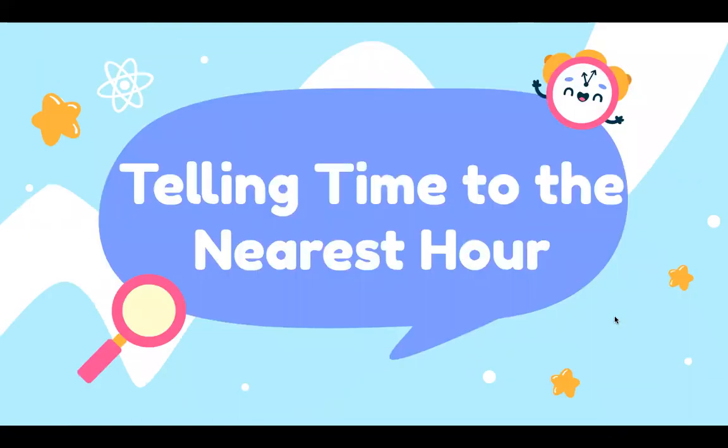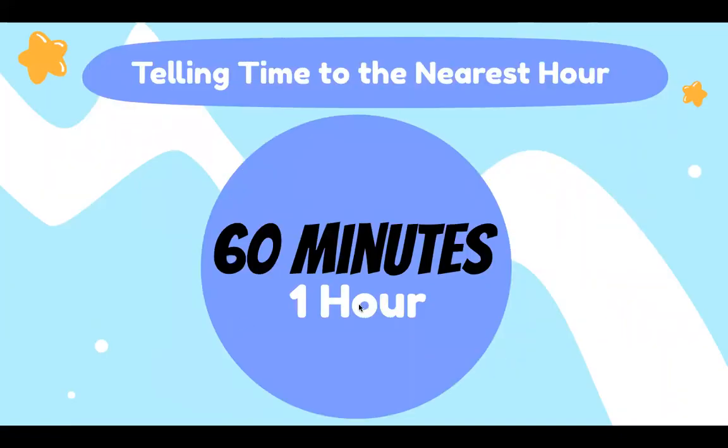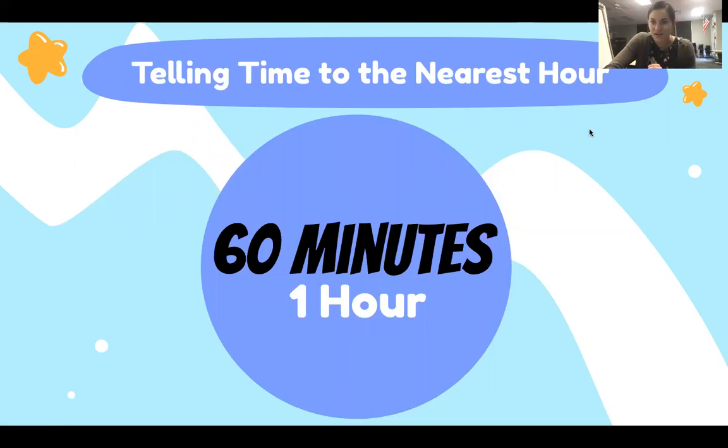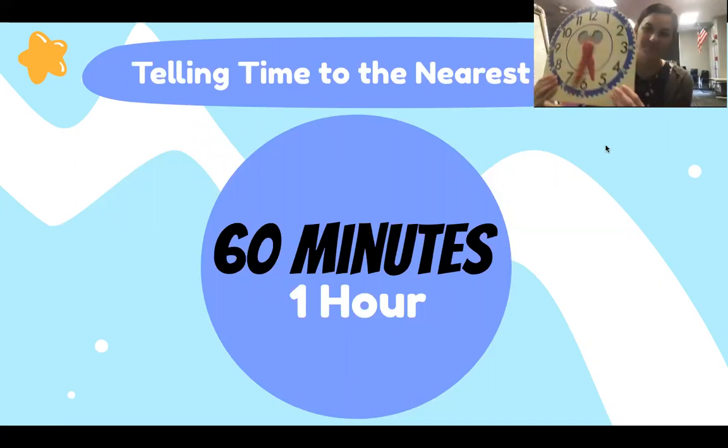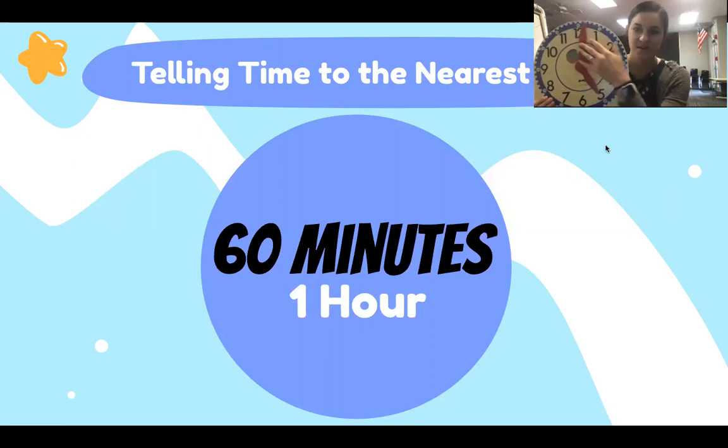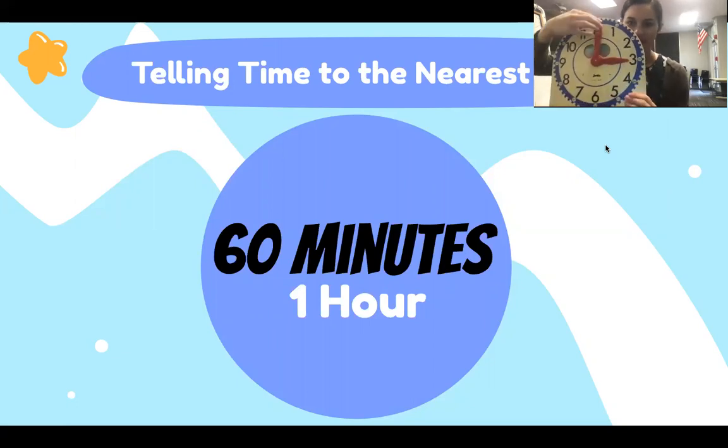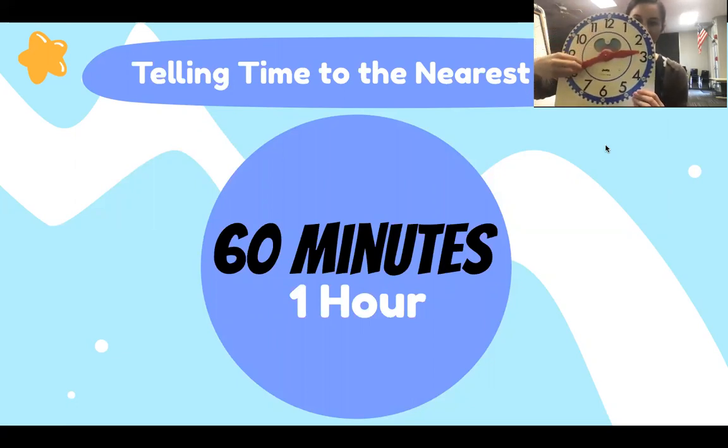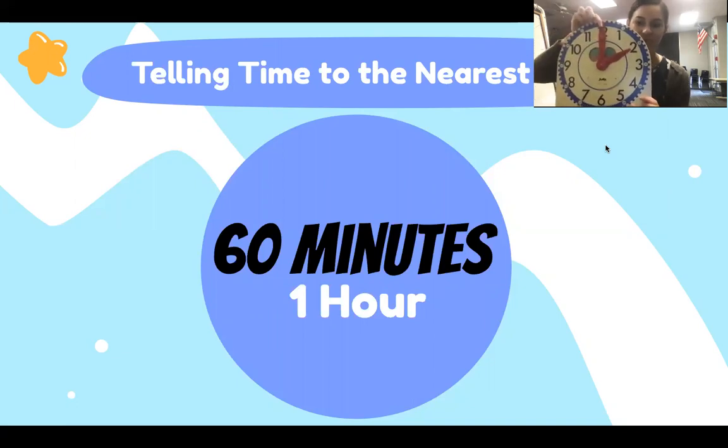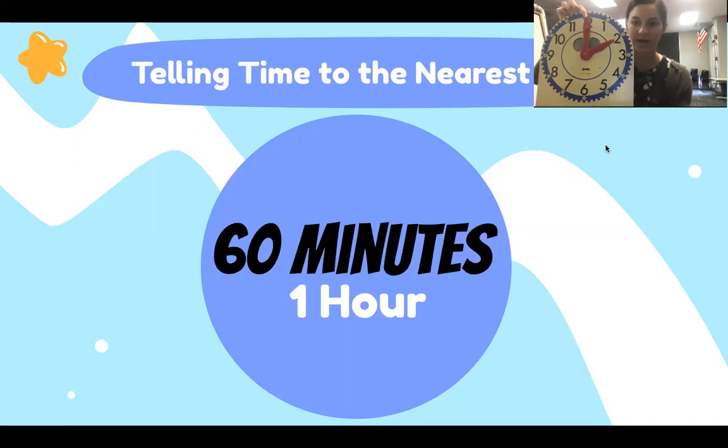The hour is three and there hasn't been any minutes yet. Now let's work on telling time to the nearest hour. One hour is 60 minutes. It's the same thing. When we have 60 minutes. So when we look at this clock that I have right here, if we start at three o'clock and we go all the way around, and when we get to the top that was 60 minutes or one hour.